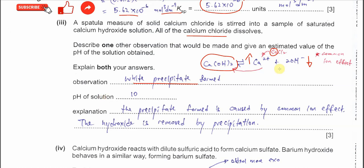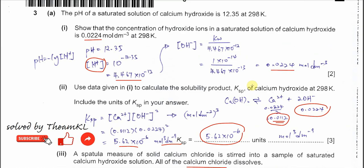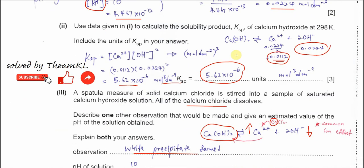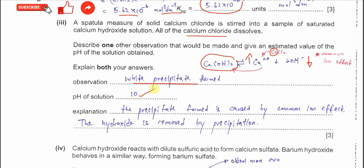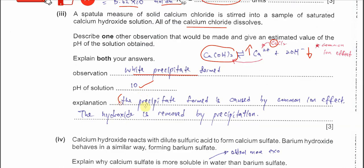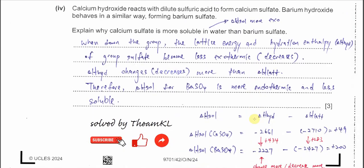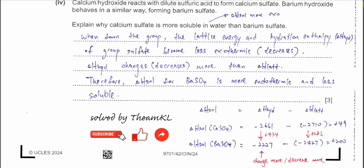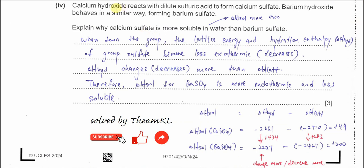There are two observations: first, a white precipitate forms; second, the pH decreases. The original pH was 12.35, so the new pH must be a value lower than that — for example, around 10 — because the hydroxide concentration is now lower. The explanation: common ion effect shifts equilibrium left, forming more precipitate and removing hydroxide from solution.